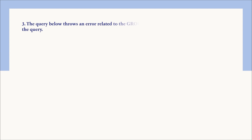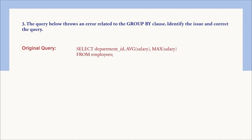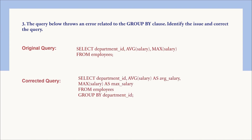Coming to the third question: the query throws an error related to the GROUP BY clause. You have to identify the issue and correct it. If you clearly see the query, the issue is that the department_id column is not aggregated or grouped. You have applied aggregation functions like AVG(salary) and MAX(salary), but you have not applied a GROUP BY clause on department_id, which is required.